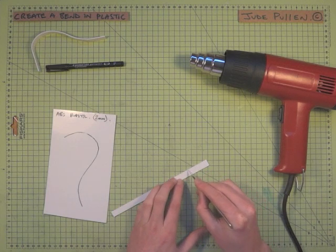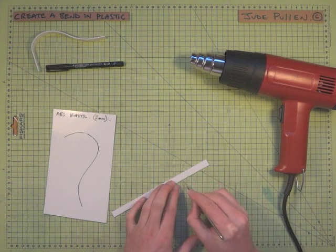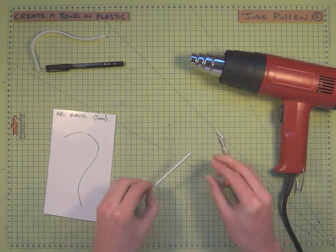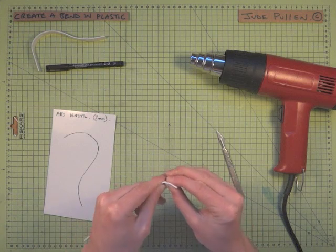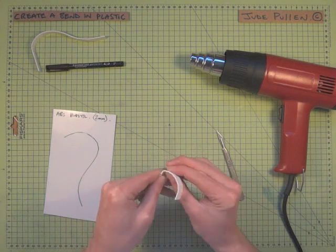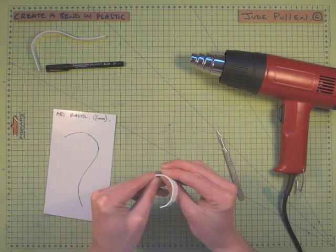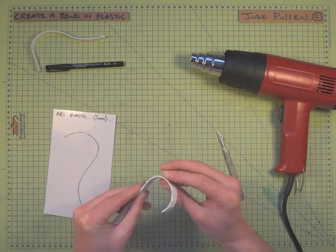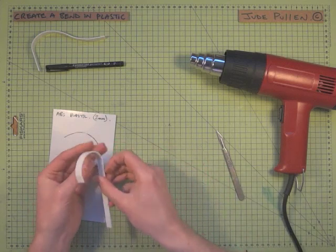You could go along scoring the plastic like so and then bending it gently. You can see we're creating a curve profile now. It doesn't matter if it actually breaks because you could always just glue it on again.